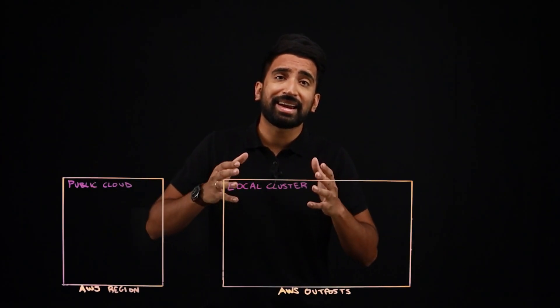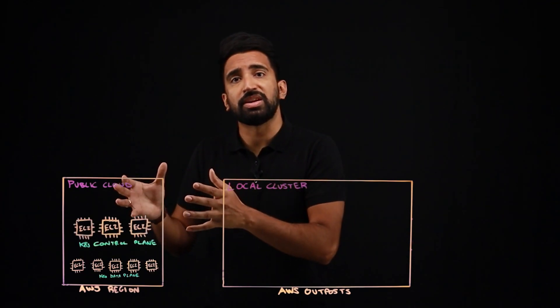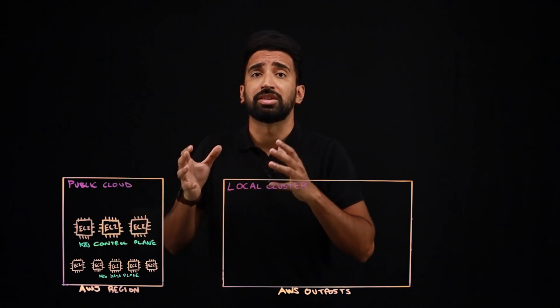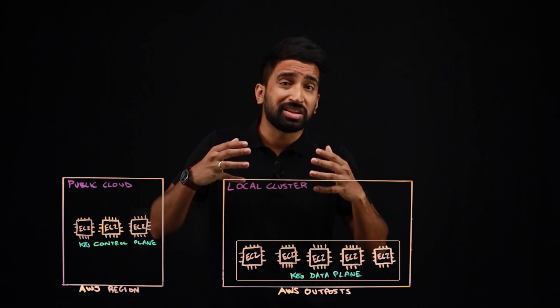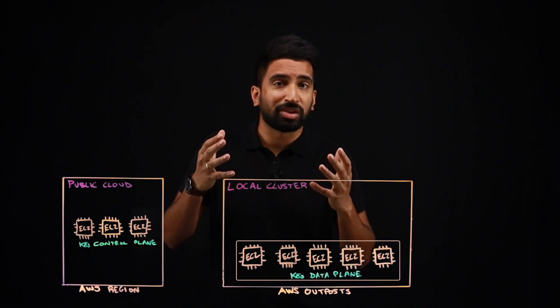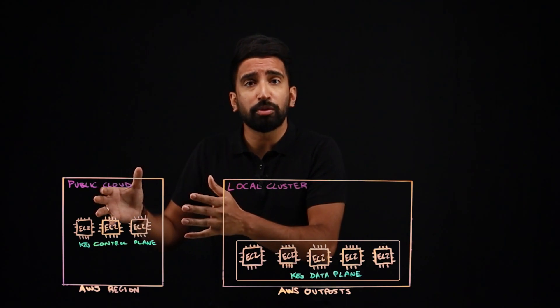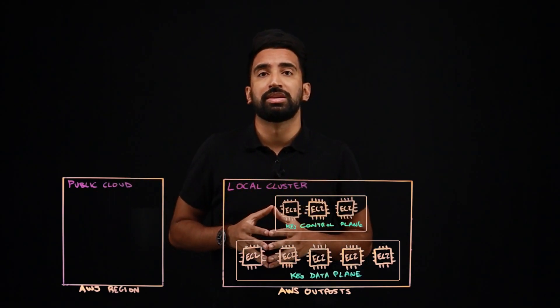This includes automatically applied security patches. So how exactly does it work? Outposts are an extension of an AWS region. Unlike Amazon EKS clusters in a region, Outposts enable you to run Kubernetes clusters on-premises. With the GA of local clusters, you can now also run the Kubernetes control plane on the Outposts.